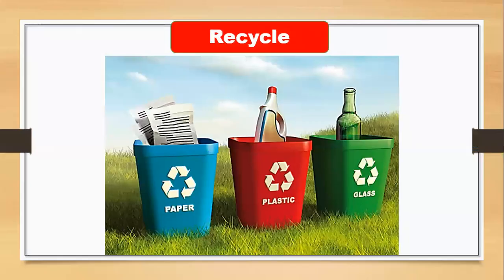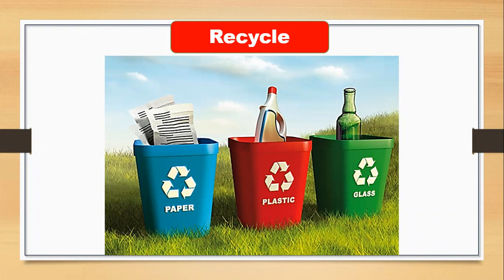We can use recycle bins. There are many types: there is a paper recycle bin where you can recycle your papers — if you don't want them, don't throw them away, use the recycle bin to recycle the paper again. You can use plastic again, so throw it in the plastic bin. And there is a glass bin. Here you can recycle your things without wasting materials.